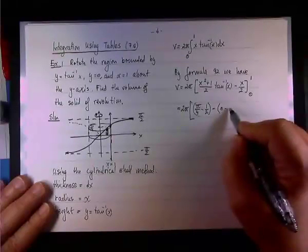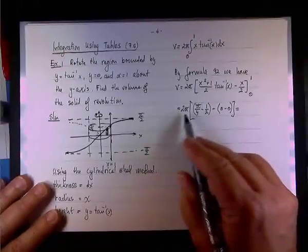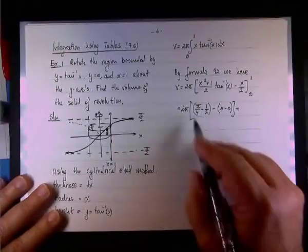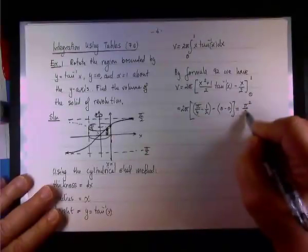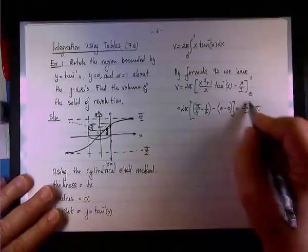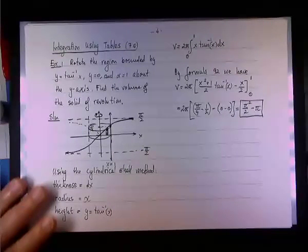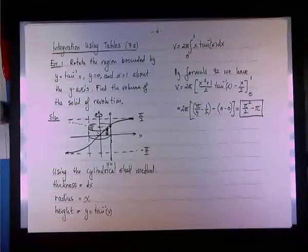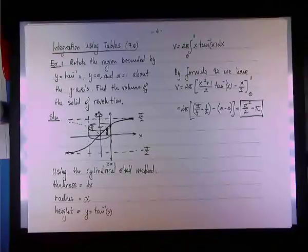And then when we have 0, let's see, we have 1 half times the inverse tangent of 0, which is 0, so we have 0 here and minus 0 here. So this is pretty much the end of the story. We have 2 pi squared over 4 or pi squared over 2 minus pi.